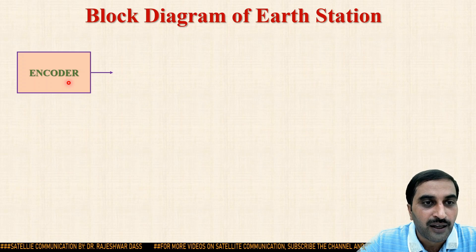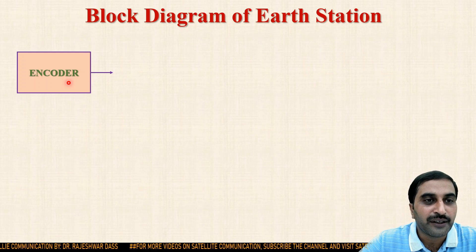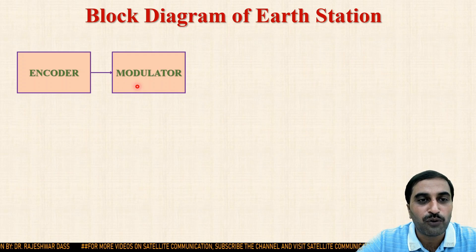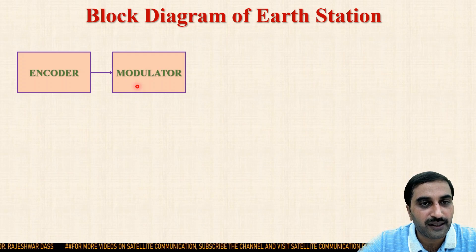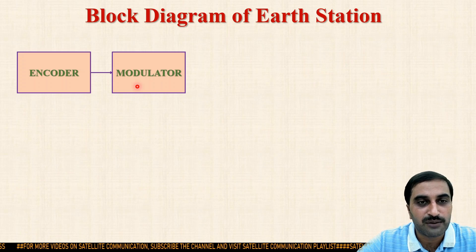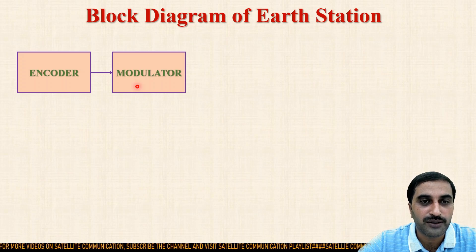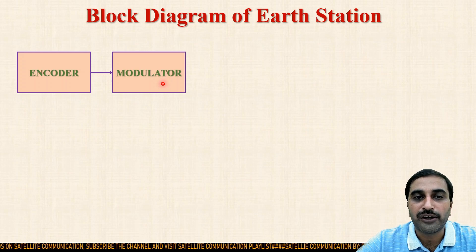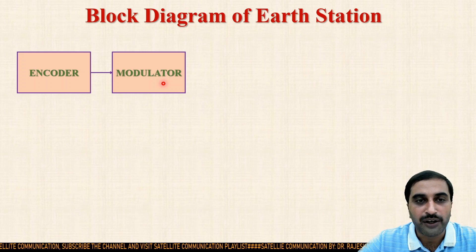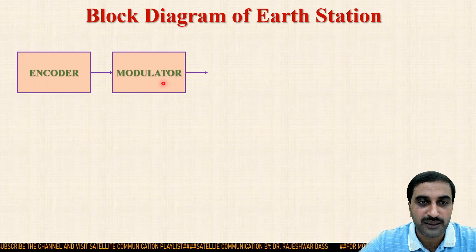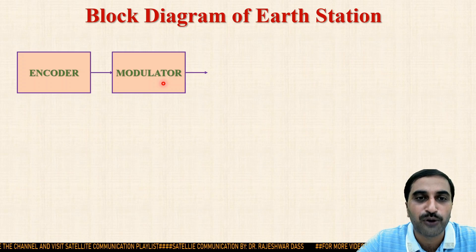After encoding the signal, that encoded signal is modulated. So for the modulation purpose, the information is fed to the modulator. Modulation can be analog modulation or digital modulation — you can do amplitude modulation, frequency modulation, pulse code modulation — many types of modulation techniques are available. So this modulator will modulate that signal. After modulating the signal, we need to transmit it on a particular band — for example if we use C band, the uplink requires 6 gigahertz frequency, so the modulated signal's frequency needs to be up-converted.